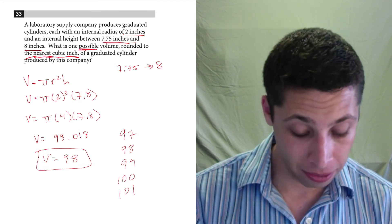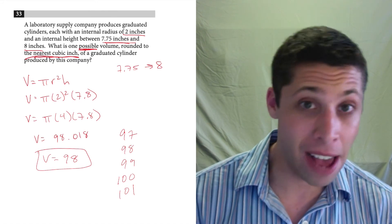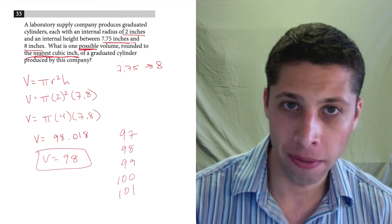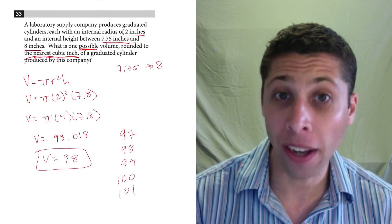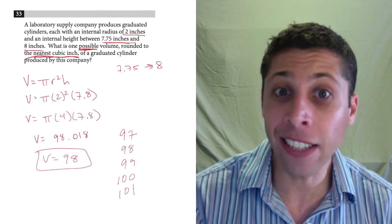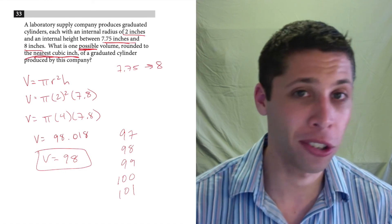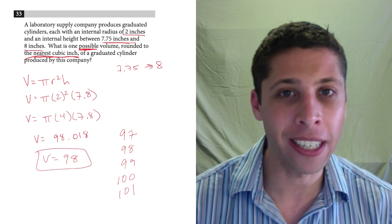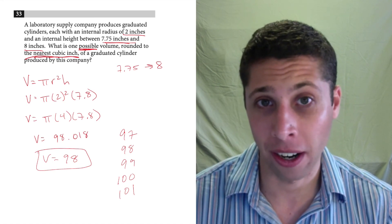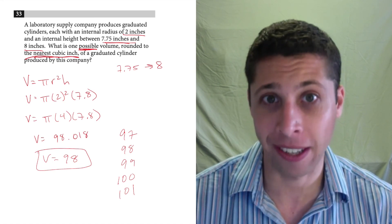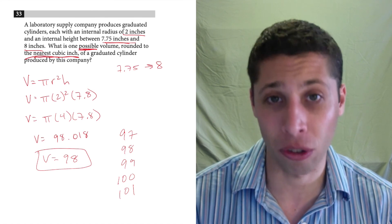But if you had bubbled, let's say, 98.5, you would be wrong because they want an even number, an integer, not a decimal. So 98.5 is within this range, but wouldn't be an acceptable answer. So you've got to be careful there when they tell you to round. They mean business. There's no partial credit for getting close. You have to follow instructions.